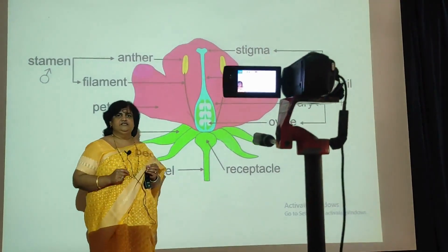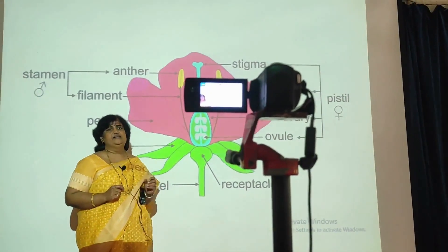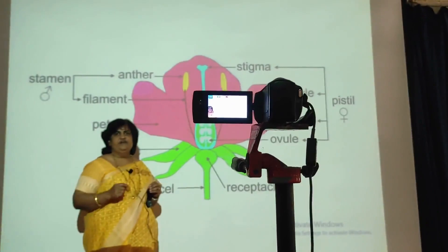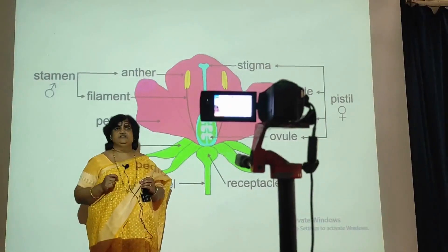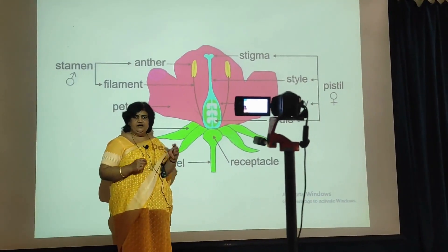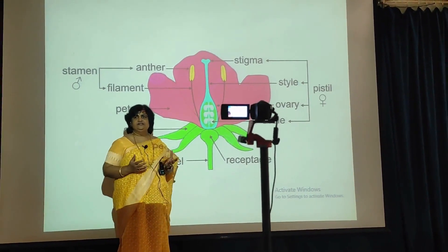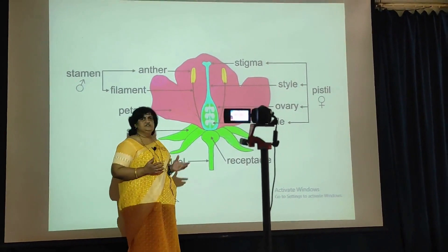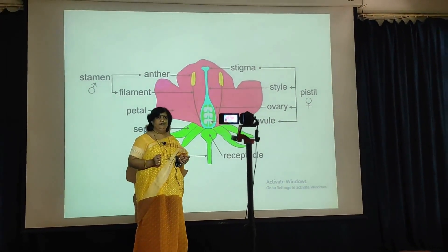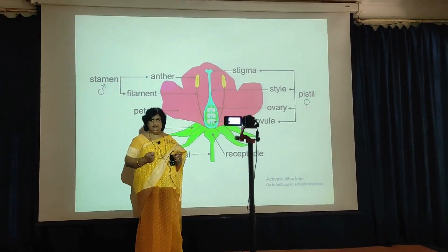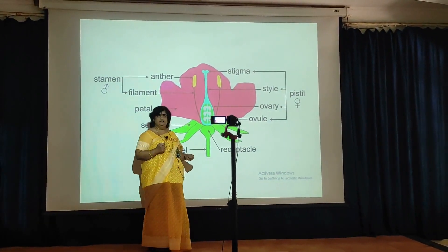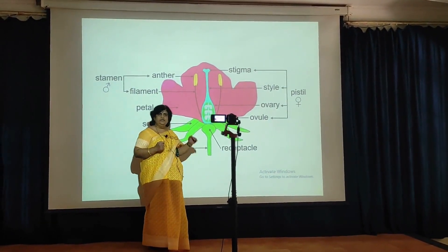This typical angiosperm flower, we call it a modified shoot for the sake of reproduction. Now let us study the various parts of this typical angiosperm flower. It has a stalk, and that stalk we call a pedicel.